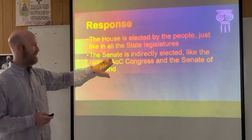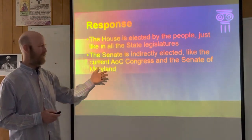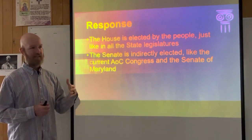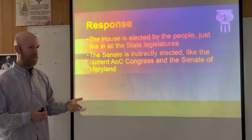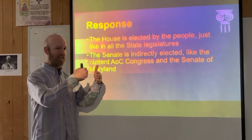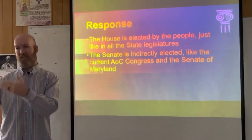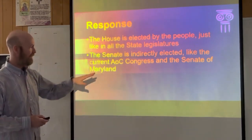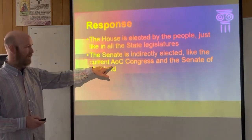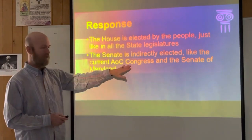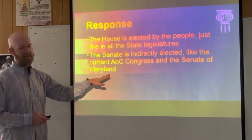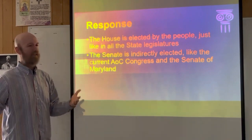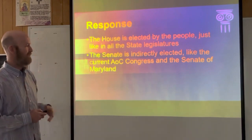They then addressed the Senate and noted it is indirectly elected. In the original Constitution, people did not directly elect their senators — senators were elected by the state legislatures, who were elected by the people. So the people elected their representatives at their state capitol, and those representatives elected the senators. They argued it's indirect but still based on the people, just like the Articles of Confederation they were replacing. They also pointed out the Senate of Maryland was elected the same way.